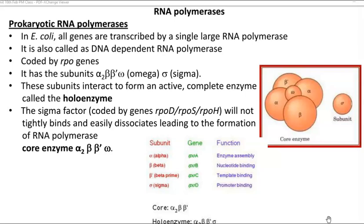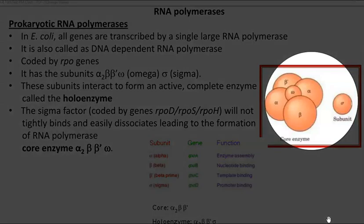The prokaryotic RNA polymerases are large compared to those present in eukaryotes. It is also referred to as DNA-dependent RNA polymerase enzyme, and they are generally coded by RPO genes. It has various subunits: two alpha subunits, one beta, one beta dash, one omega, and a sigma subunit. These subunits interact to form an active complete enzyme called a holo enzyme.